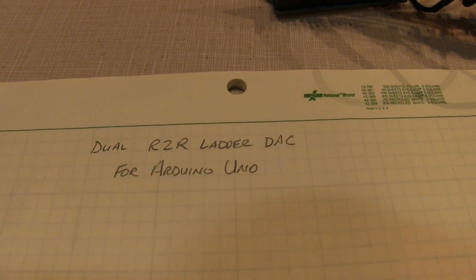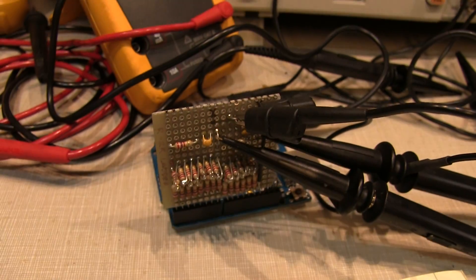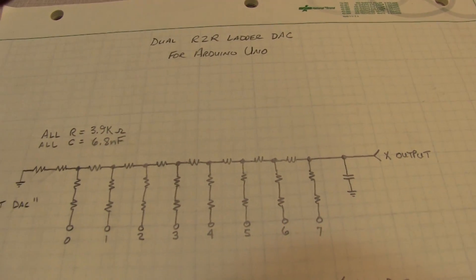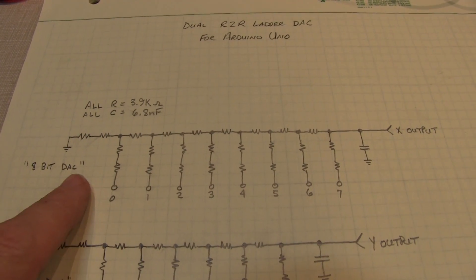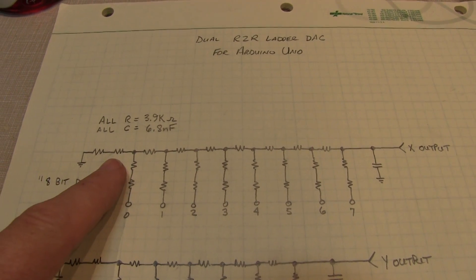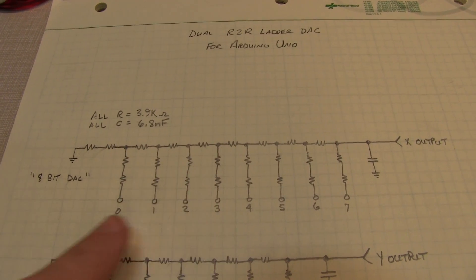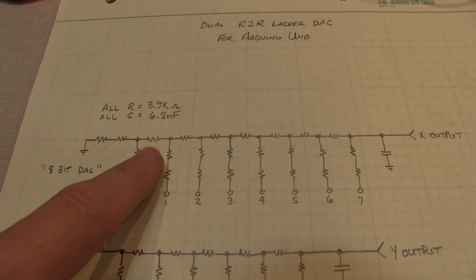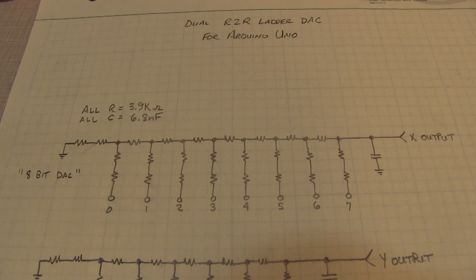So the schematic for the R2R ladder DAC for the Arduino Uno, which was breadboarded in this circuit here, is really quite simple. For the 8-bit port, we build up the R2R ladder in this fashion. And I literally built this out of using two resistors for the 2R ports and one resistor for the R in between. So I got a true ratio of the 2R to R. So that's kind of where the R2R name comes from.